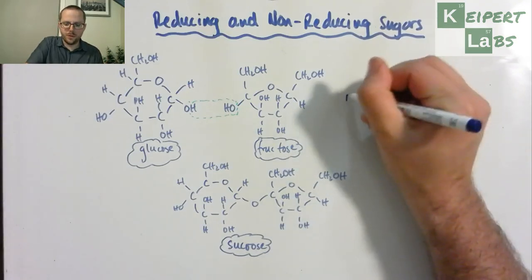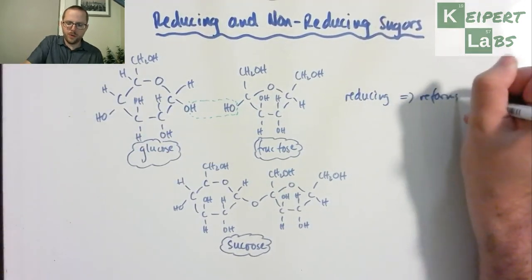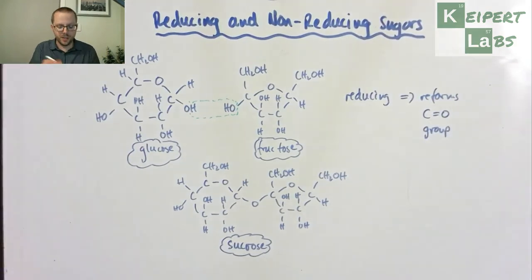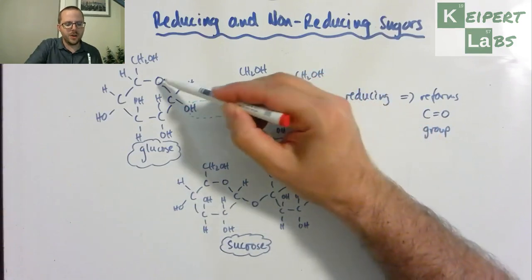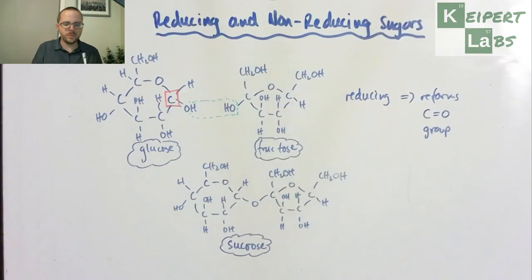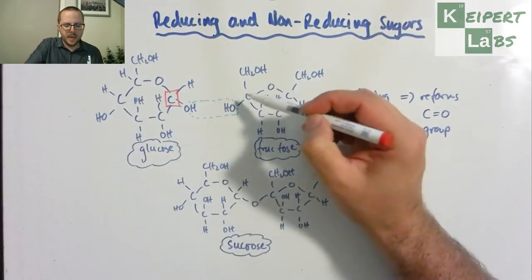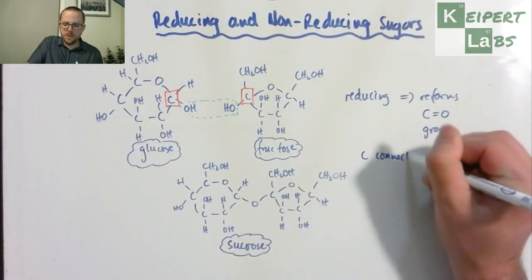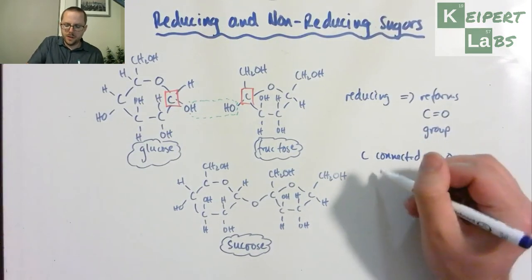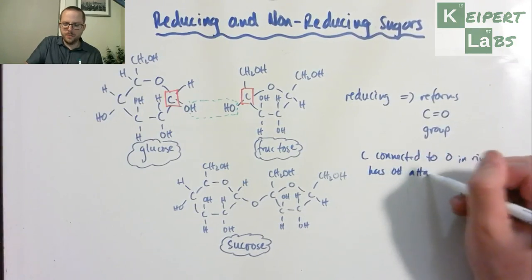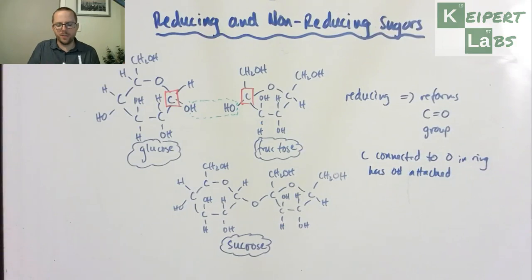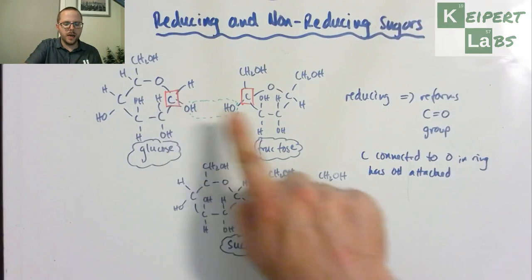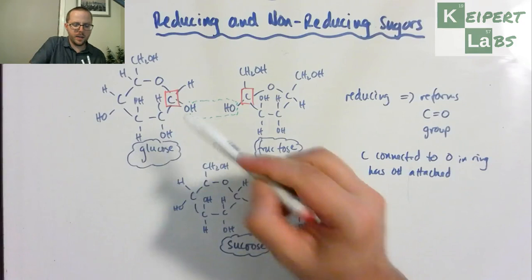Reducing reforms our carbonyl group. And therefore non-reducing is something that can't do that. And so what we need is that we need a carbon that's attached to the oxygen in the ring and also has an OH group attached to it. So in glucose we have this carbon here. We need a carbon connected to the O in the ring and has OH group attached. If it doesn't have that, if we don't have one of those present in our structure, then we can't open up again. The ring is kind of locked, closed. So you notice that we've got this carbon here and this carbon here. So glucose and fructose are reducing sugars. So they get a tick.